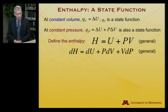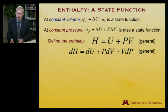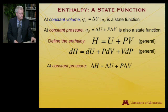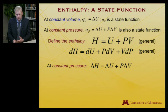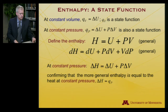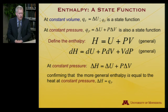The differential form is dH equals dU plus, applying the chain rule to the product, P dV plus V dP. But if I am at constant pressure, that last term dP is zero. And I get delta H is equal to delta U plus P delta V. That confirms that enthalpy is equal to the heat at constant pressure and also that it's a state function.